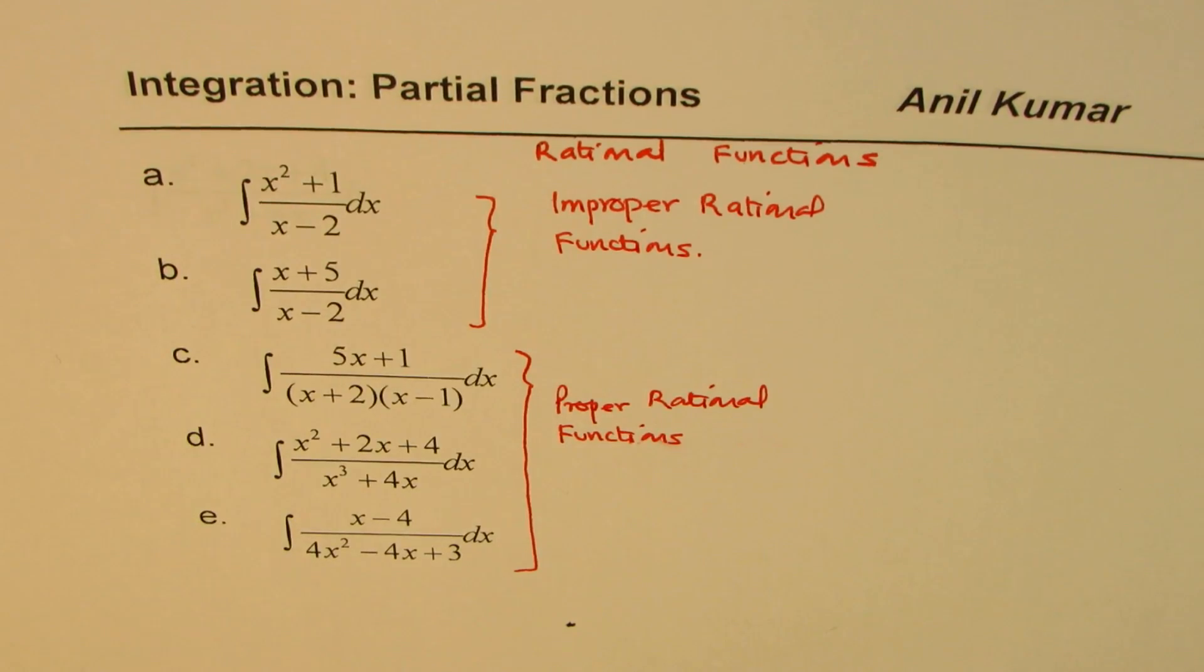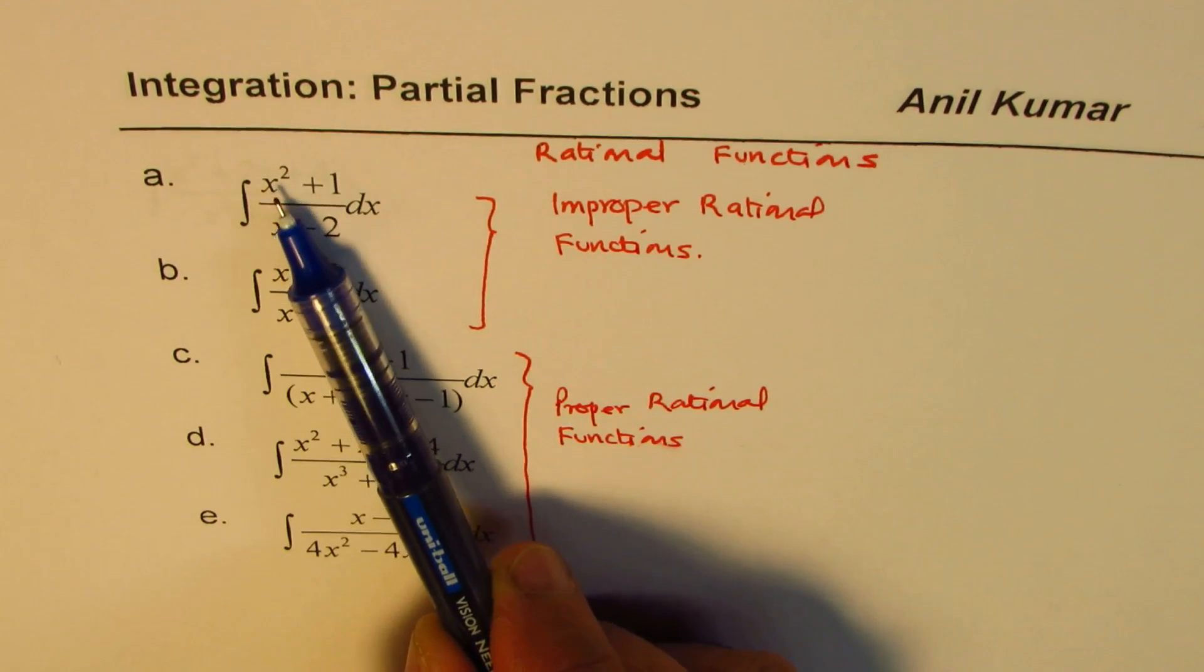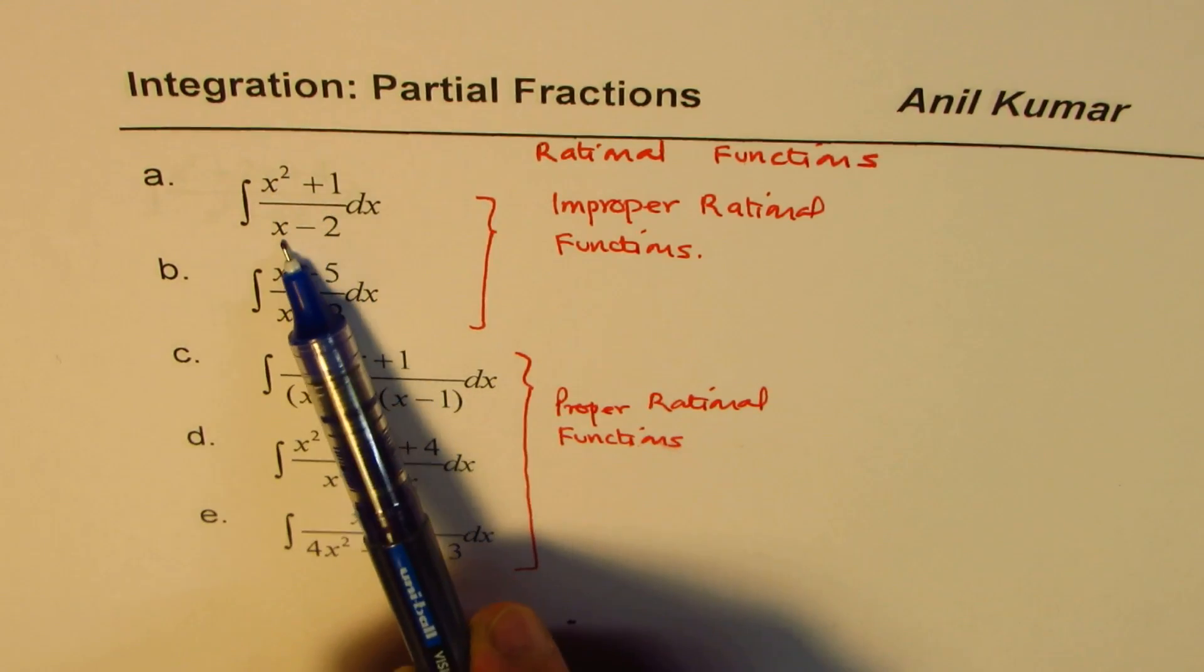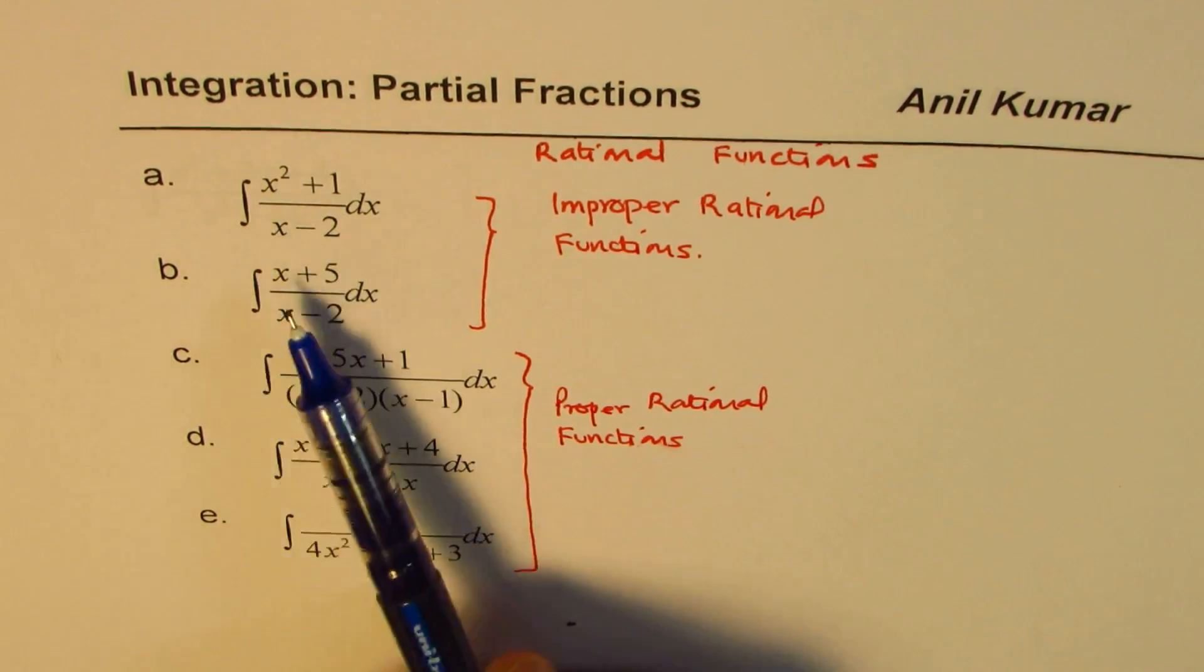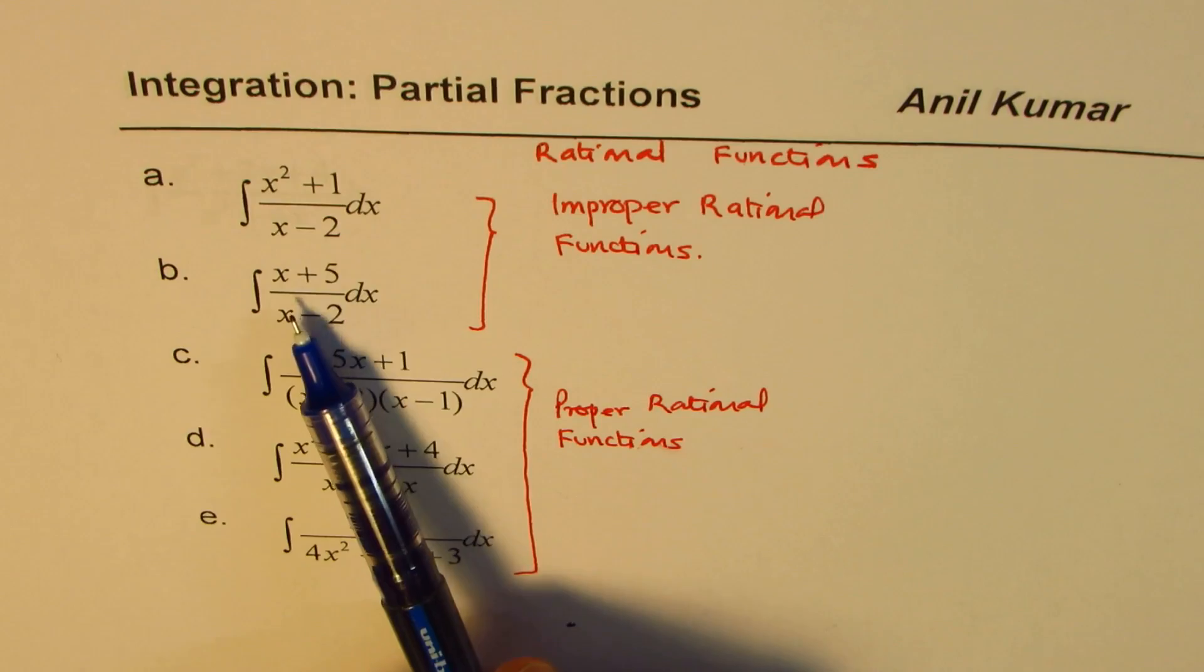Now, the method is that whenever you are working with improper rational functions, that is, numerator degree is higher. In this particular case, numerator degree is two, denominator is one, higher by one. And here, the degree is same, right? So it is not lower, I should say. In that case, we perform long division, and then we factor.